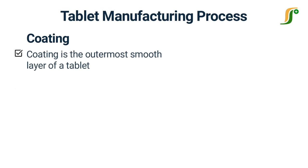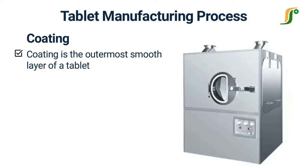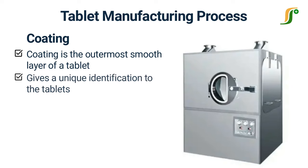The coating is the outermost smooth layer of a tablet. It gives a lot of advantages to the tablets including improved appearance and stability, reduced dissolution rate, and masks the unpleasant taste. The coating of tablets gives a unique identification to the tablets of a brand. There are many methods used for coating, but spraying and dipping are common.